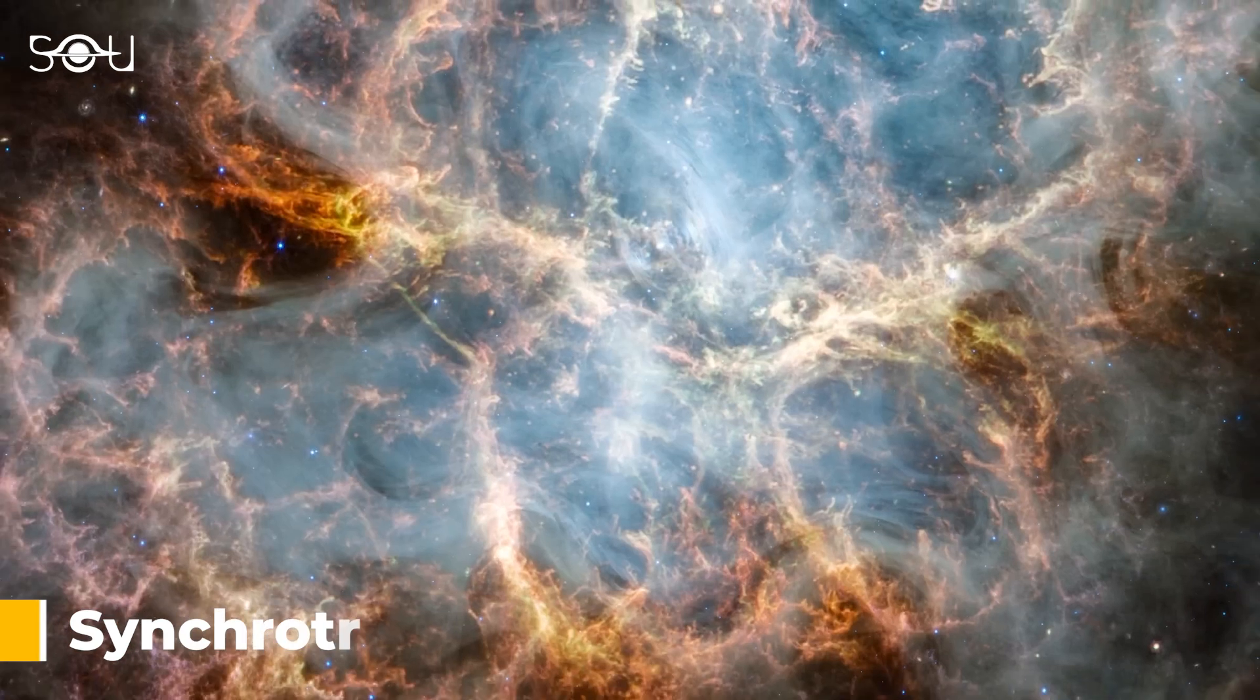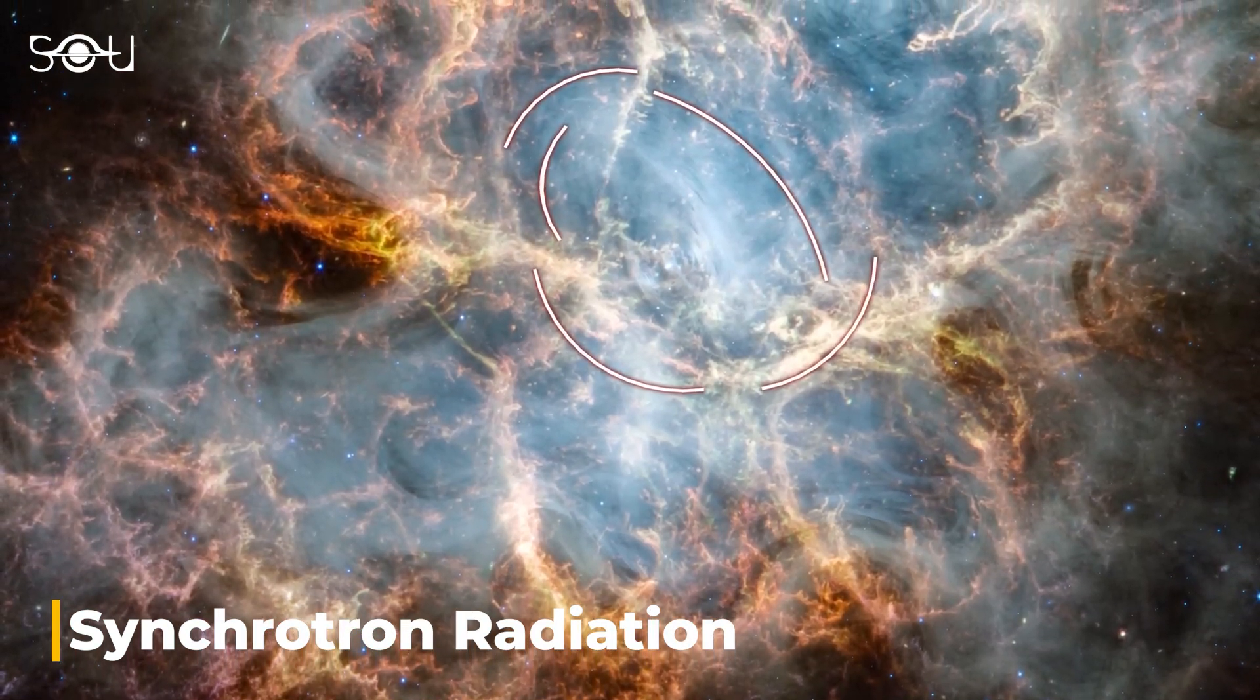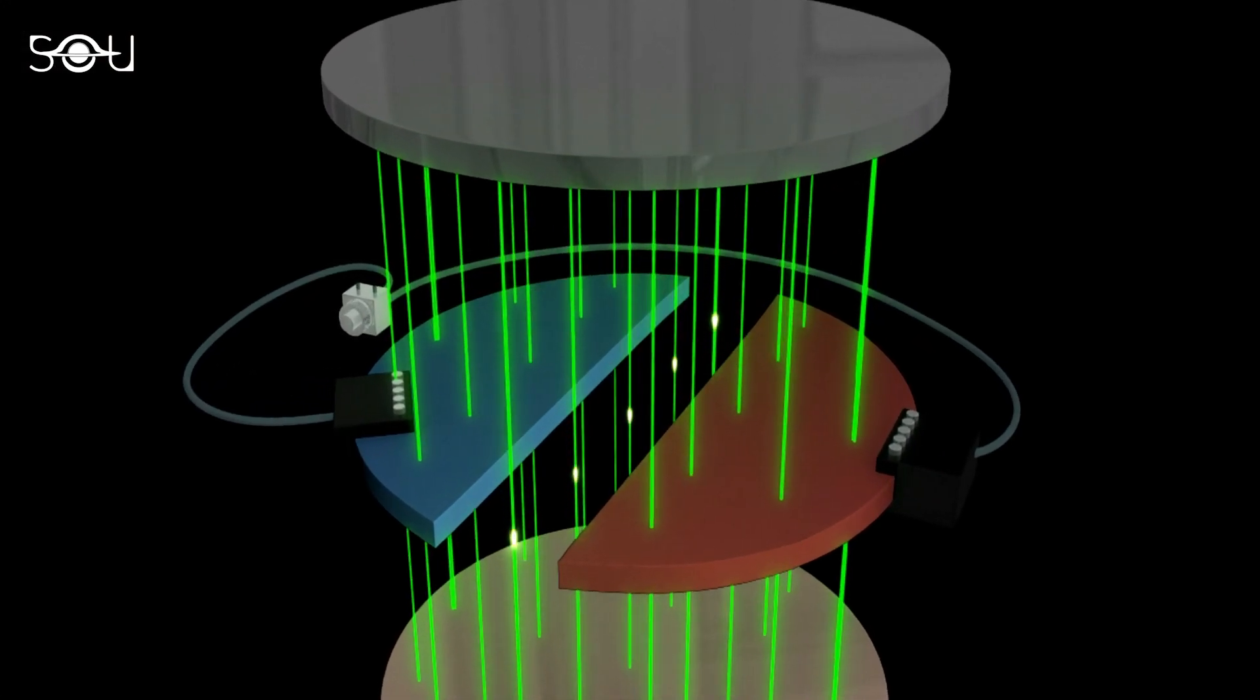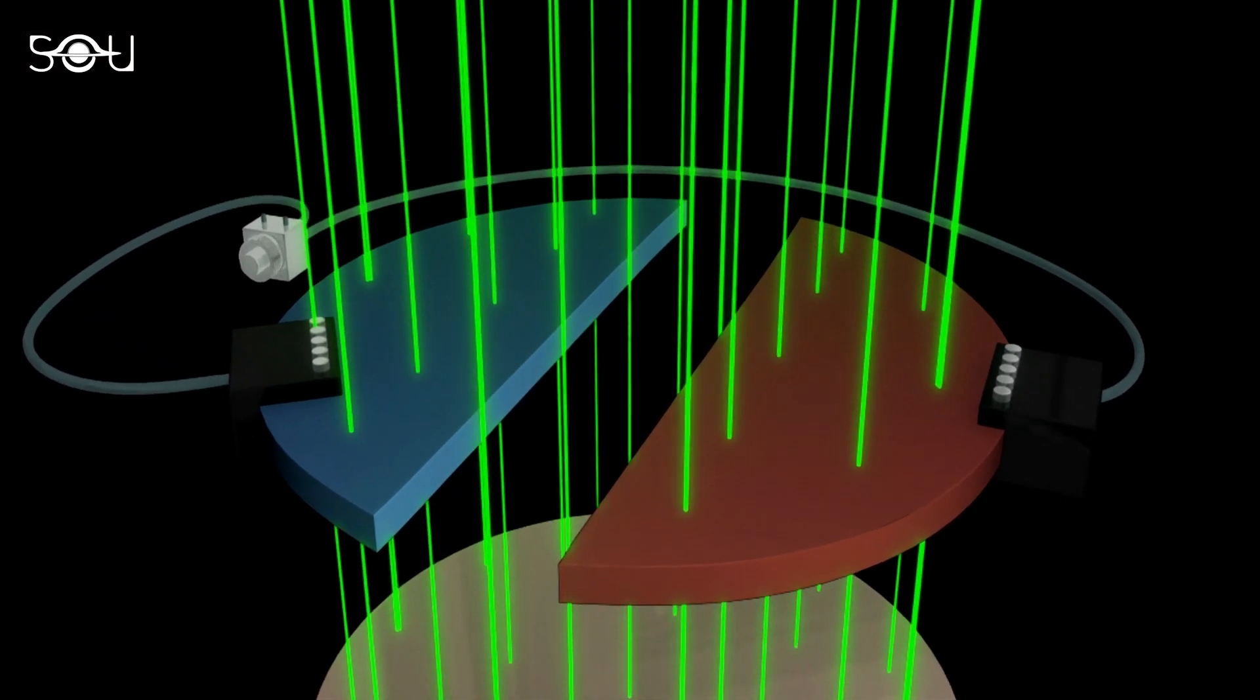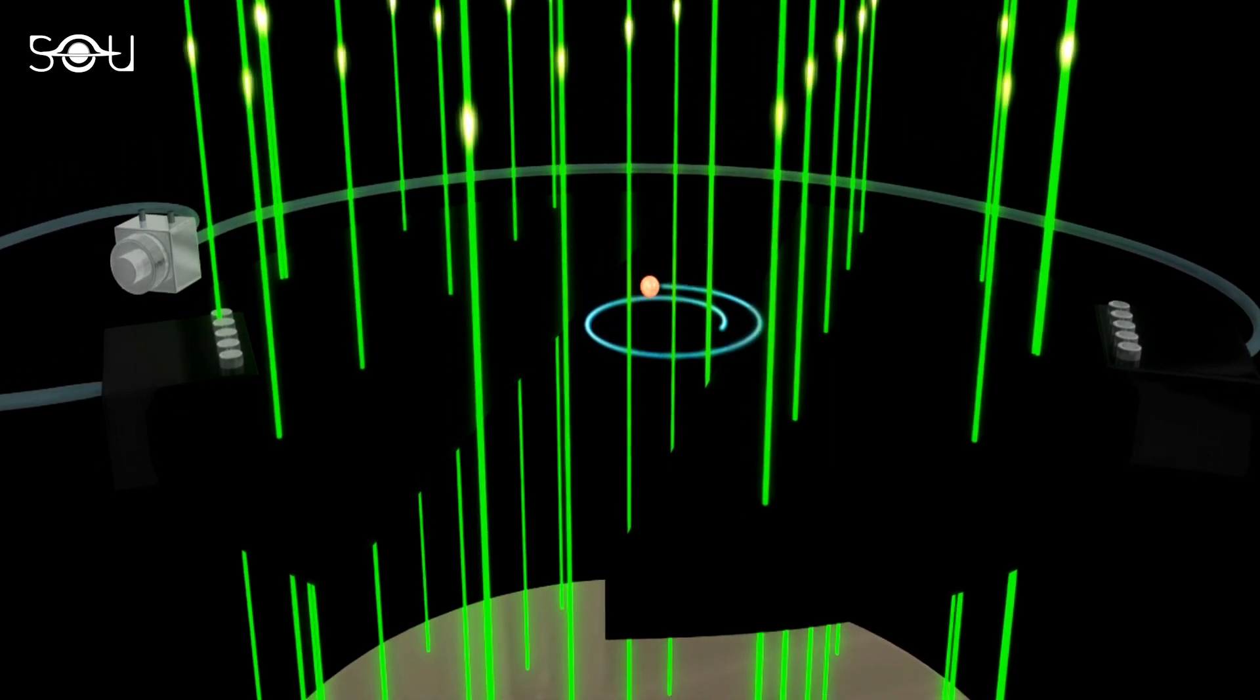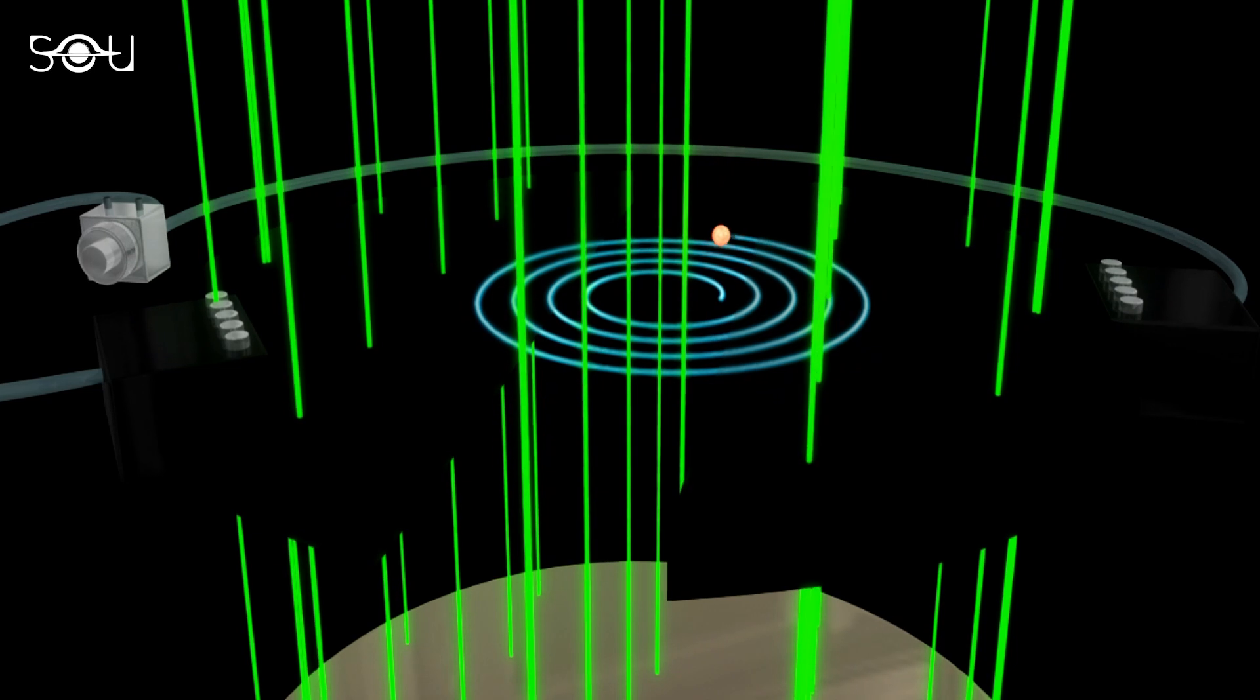The most important aspect of this image is the synchrotron radiation that's clearly visible in the Webb observations. Synchrotron radiation is a type of electromagnetic radiation emitted by charged particles such as electrons when they are accelerated to relativistic speeds and forced to travel in curved paths by a magnetic field.